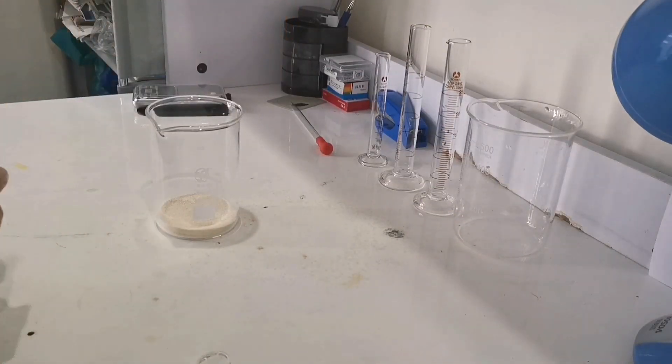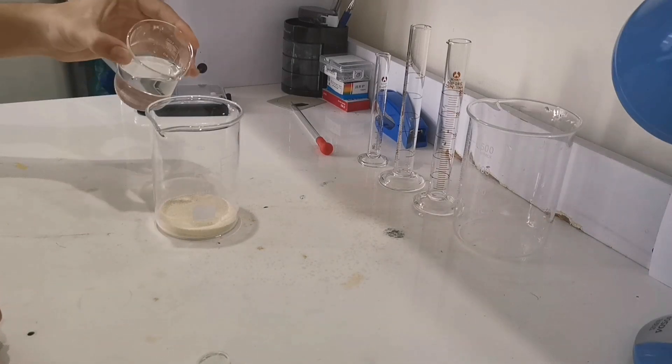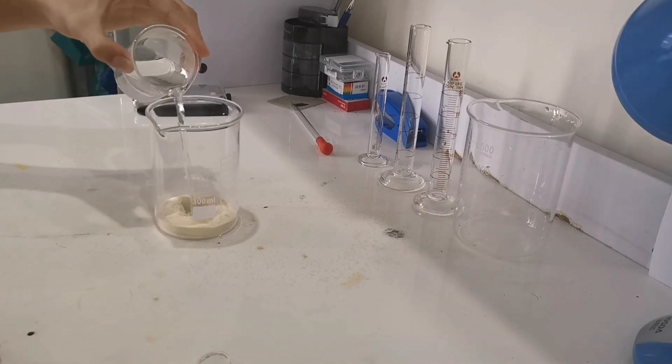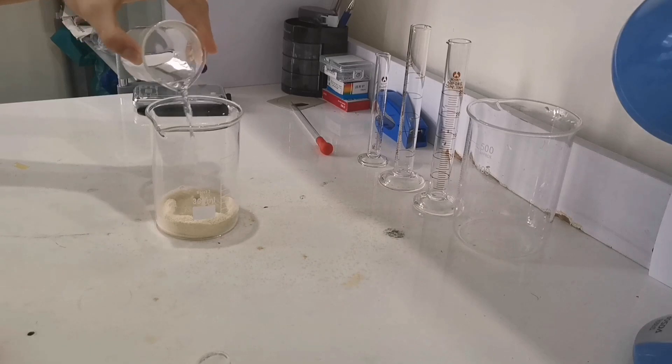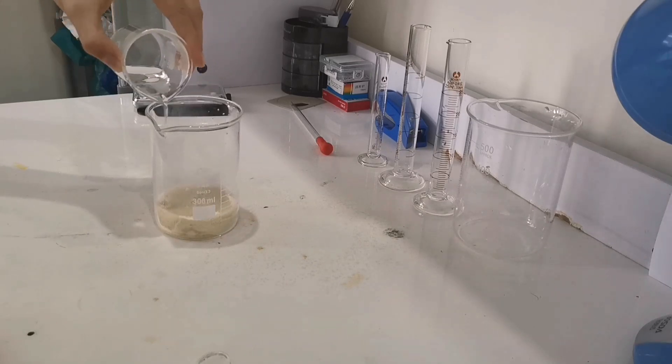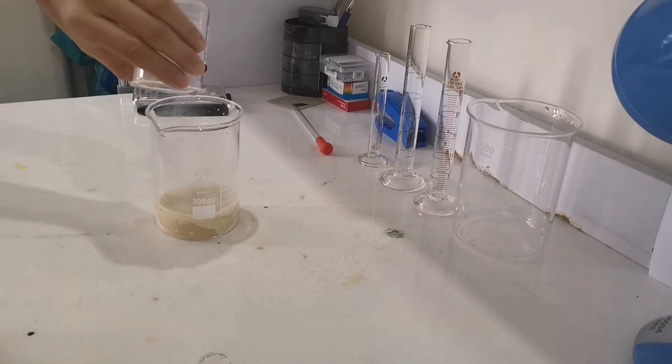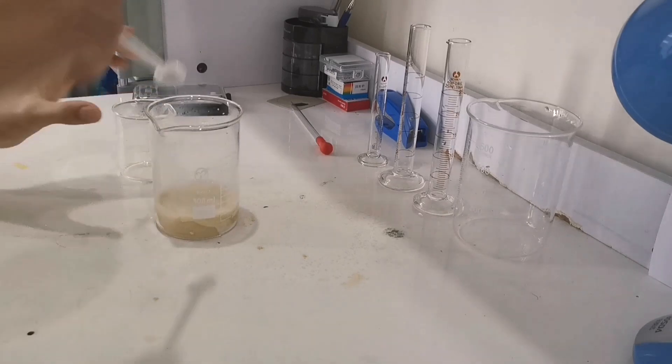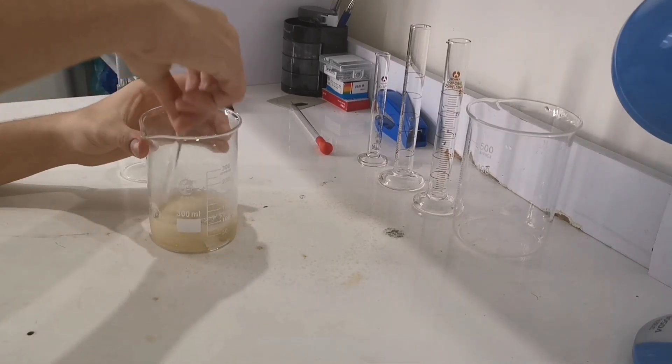Then to casein, we add 65 mls of boiling water. Casein has a very low solubility in cold water. So hot water can raise the solubility of casein in water. But here we don't actually dissolve casein into water.